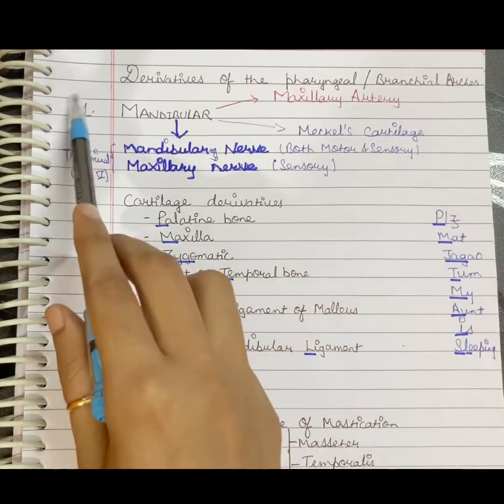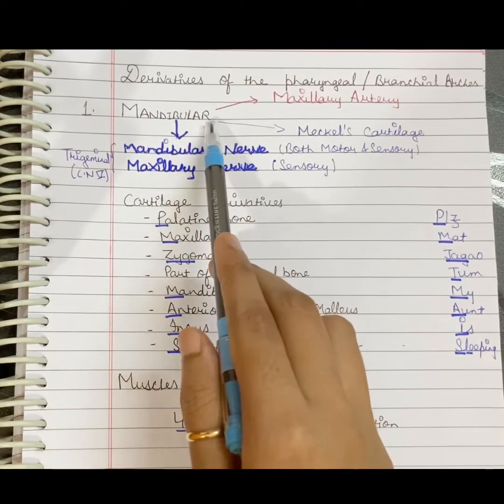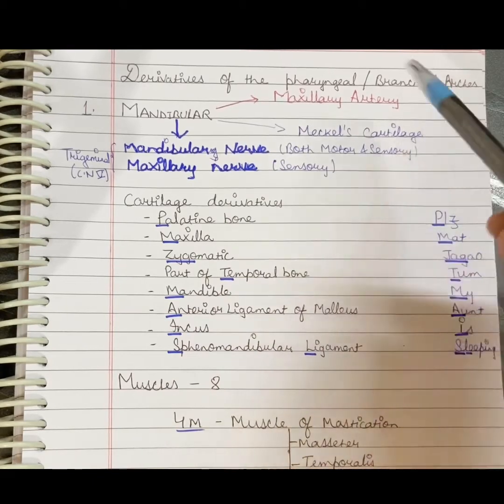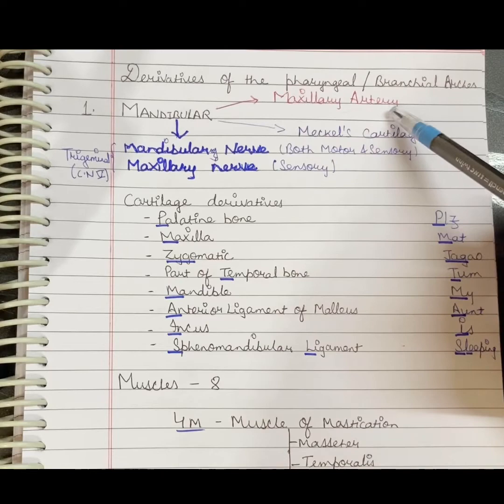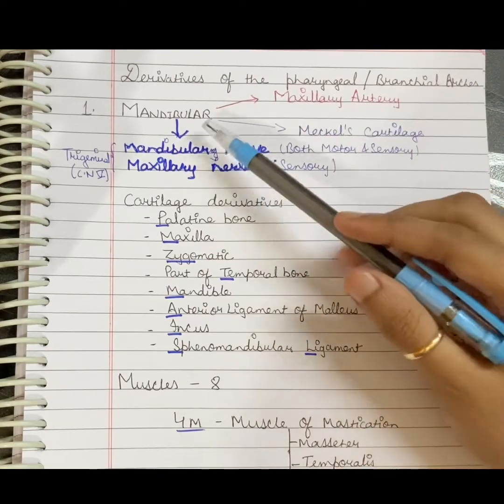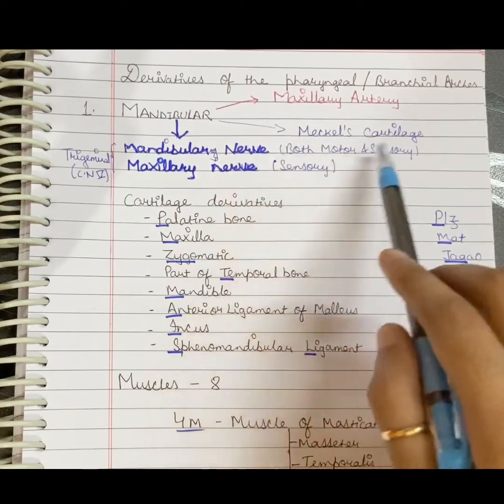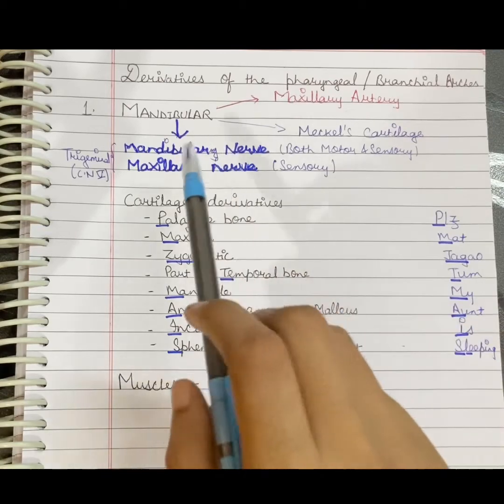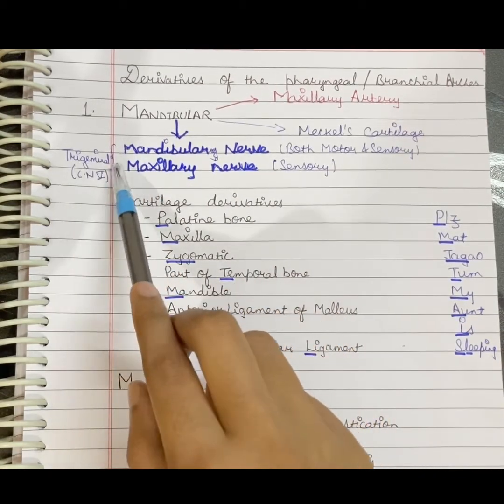The first pharyngeal arch is also known as the mandibular arch. The cartilage derived from this arch is Meckel's cartilage, and the artery is the maxillary artery. Two nerves are derived from the first pharyngeal arch: the mandibular nerve, both motor and sensory branches, and the maxillary nerve, only sensory branches. These maxillary and mandibular nerves are branches of the trigeminal nerve, which is cranial nerve five.